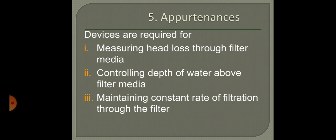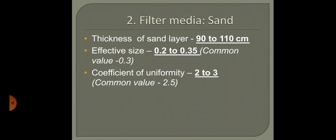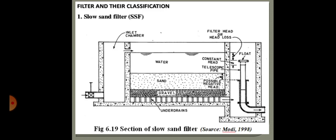Appurtenances are devices used for measuring the head loss through the filter media, controlling the depth of water above the filter media, and maintaining a constant rate of filtration through the filter media. These three functions are ensured by the appurtenances provided in a slow sand filter.